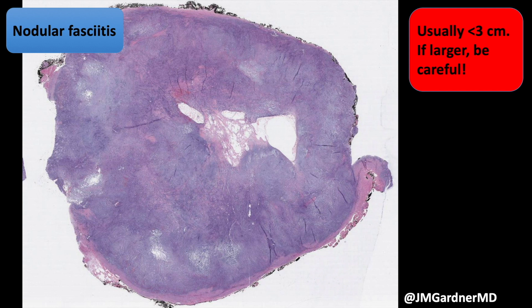A couple of tips and pearls about nodular fasciitis: they tend to be small. If you see a lesion you think is nodular fasciitis but it's bigger than three centimeters, you have to think twice. It's not that it couldn't be four centimeters, but it probably can't be ten centimeters. On the head and neck, things are usually sampled before they get that large, but it's important to know they're usually small, and even from low power you can see cystic spaces.